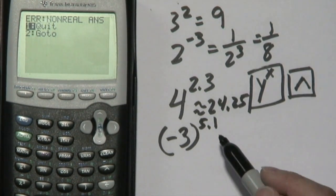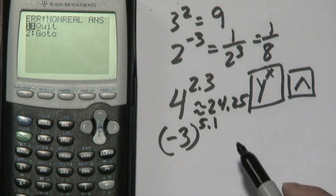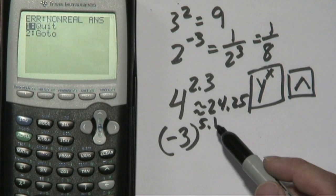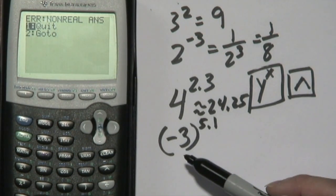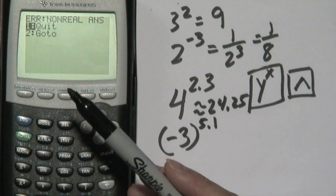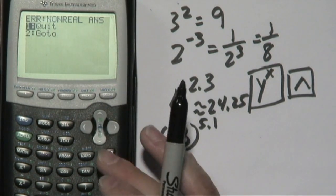Which, as you can probably tell, says error, non-real answers. So if you want to find decimal powers, stick with positive bases, not negative bases, because if you have negative bases, you're going to have non-real answers, and your calculator doesn't like that too much.